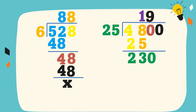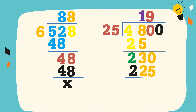230 divided by 25 is equal to 9. 9 times 25 is equal to 225. Let's subtract. 230 minus 225 is equal to 5.